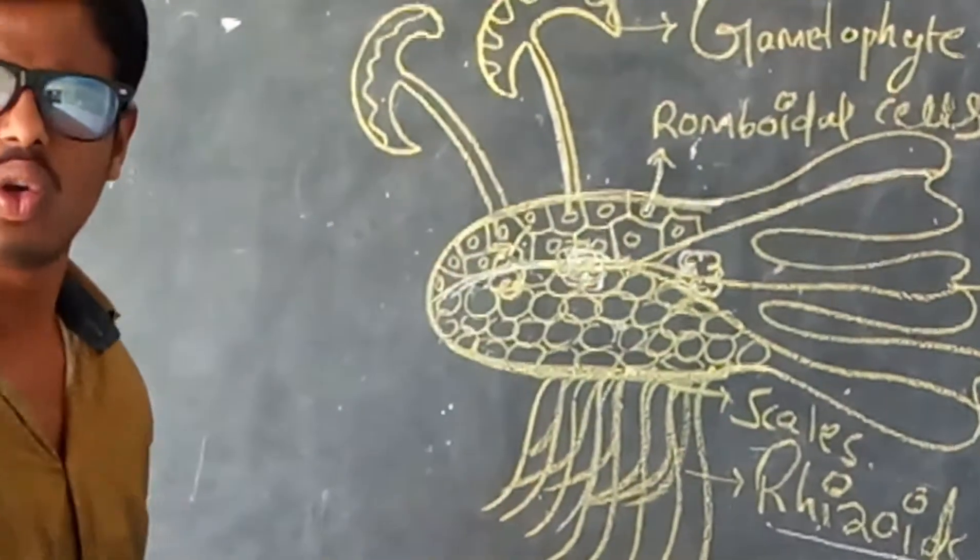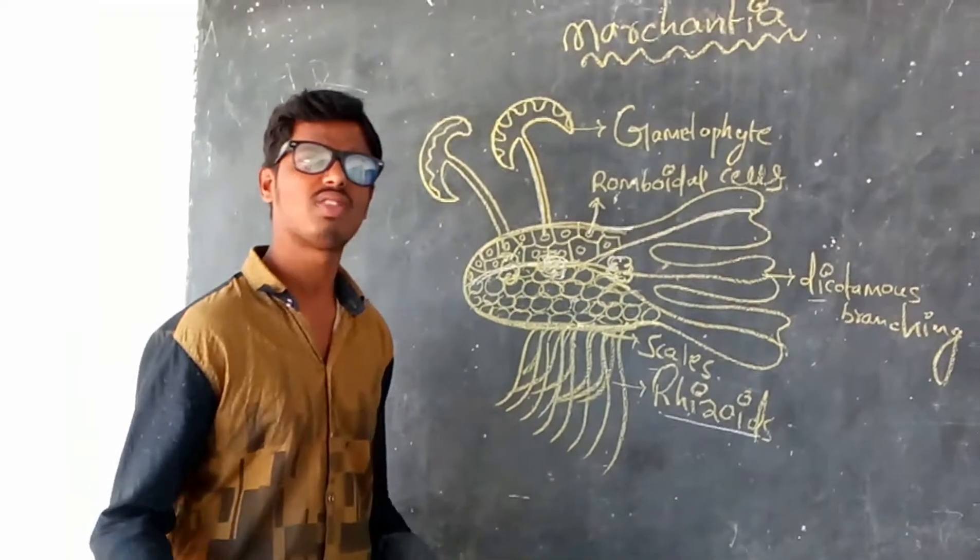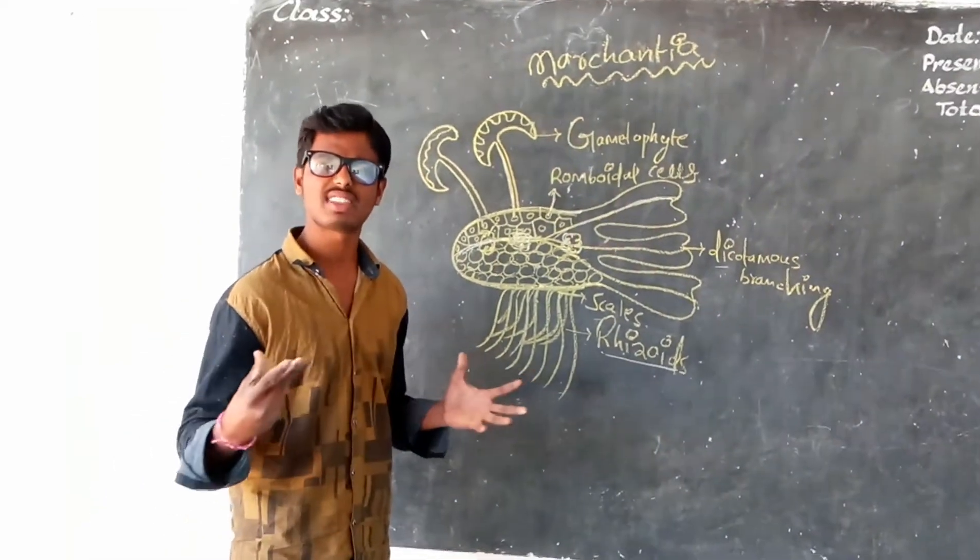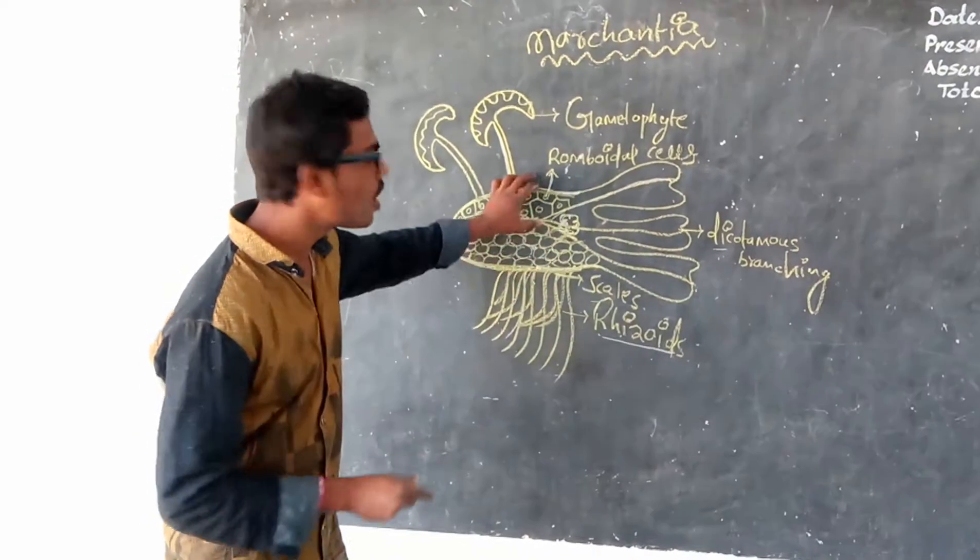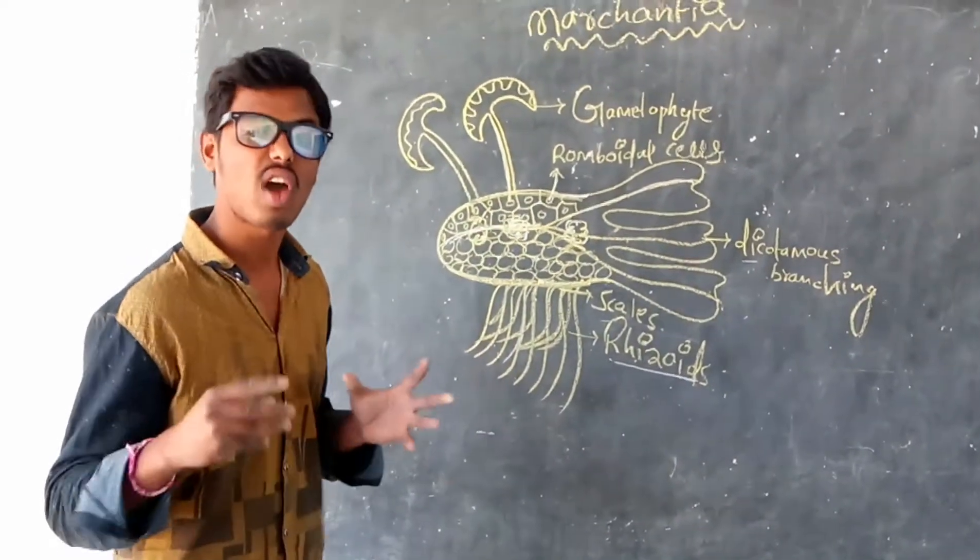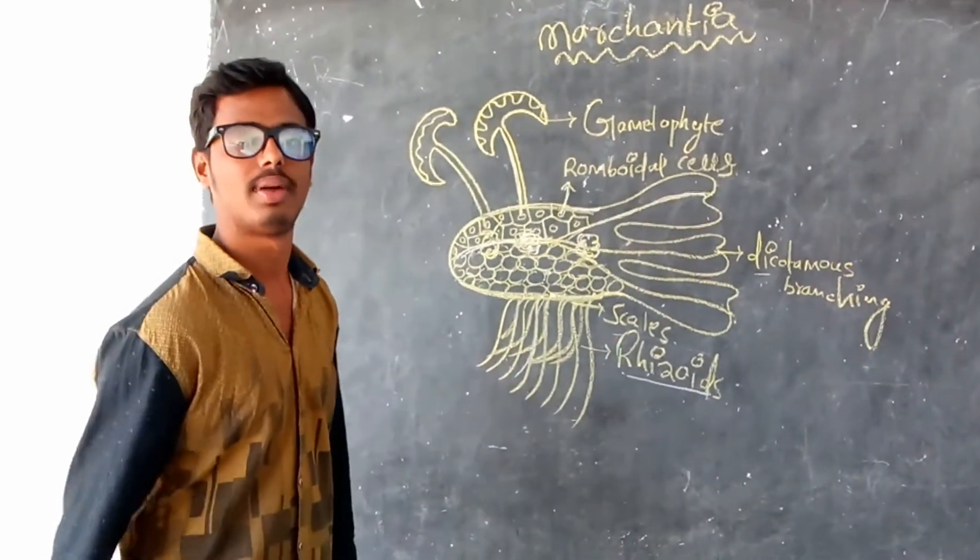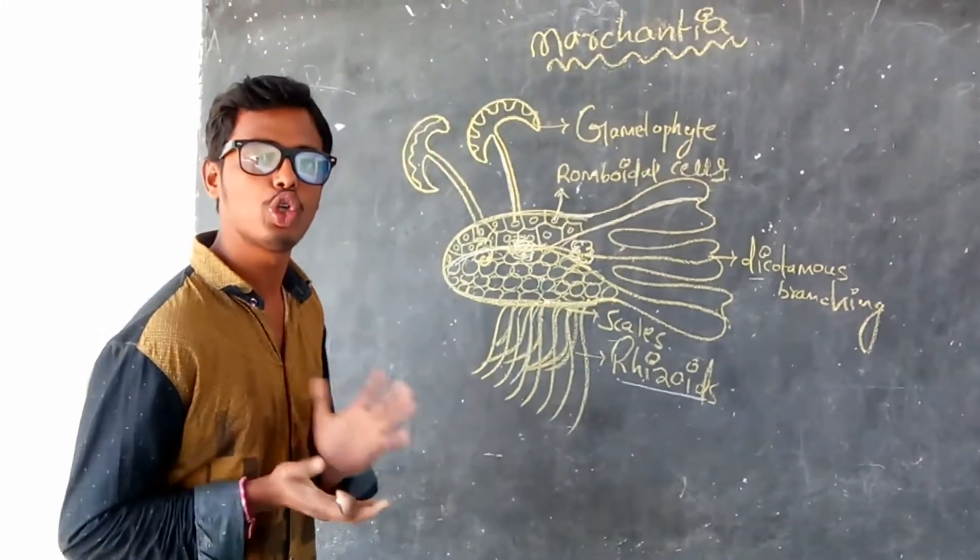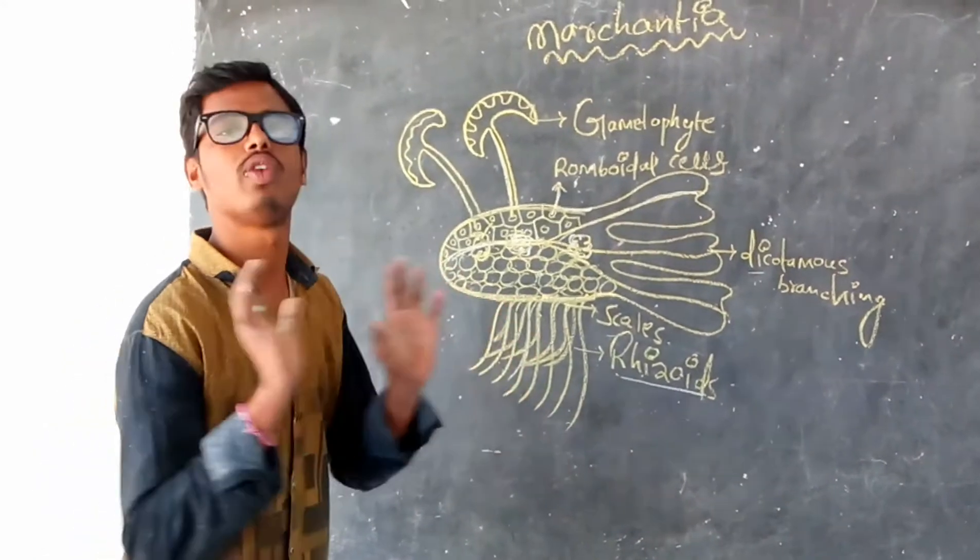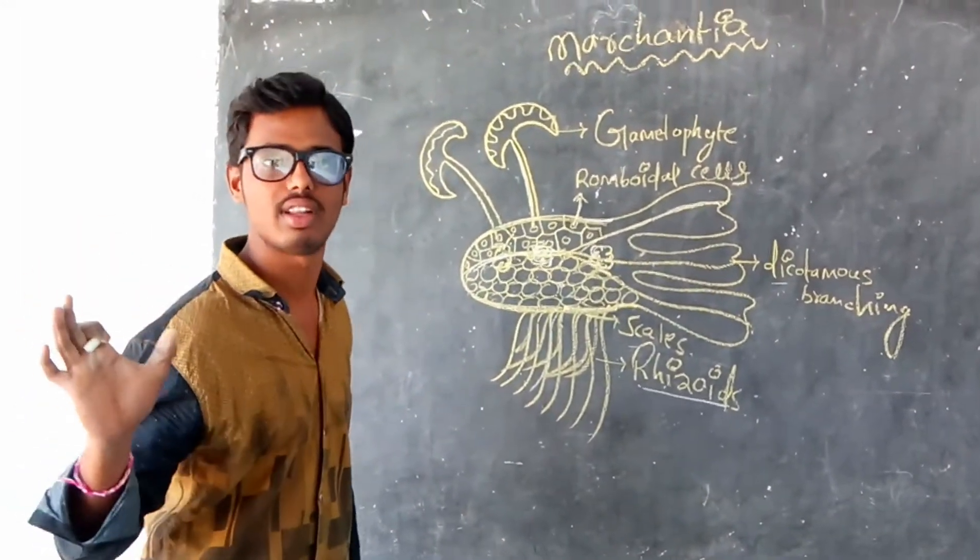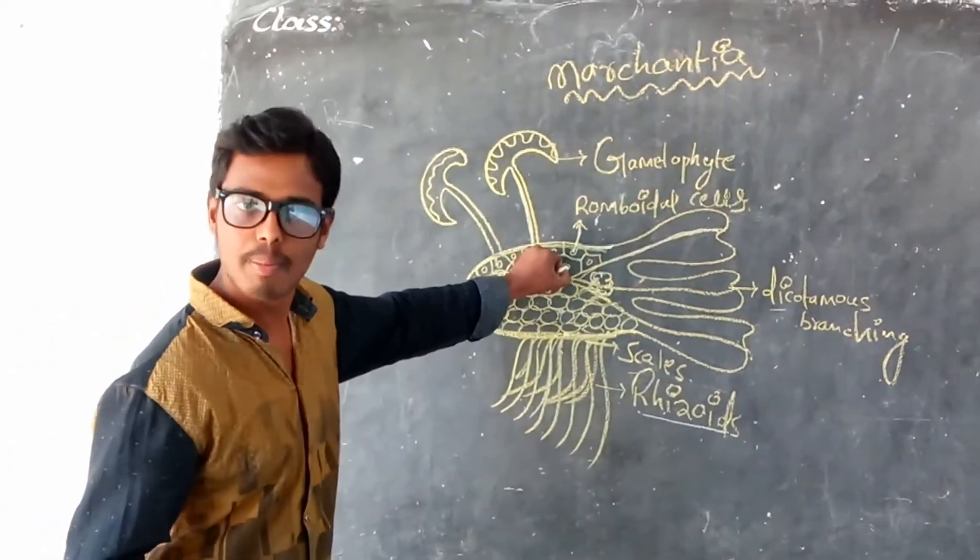This is the dorsal part. The dorsal part has a number of gemma cups present. The cup-like structures that we observe in the plant body are called gemma cups. Every gemma cup produces gemma. Gemmas are mainly useful in vegetative reproduction.